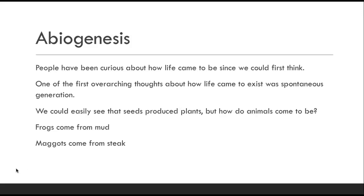That became the prevailing thought because nobody did any science to prove it correct or incorrect. It wasn't until actual scientists started testing these hypotheses that things changed. They got two identical cuts of steak, leaving one covered and one uncovered, and saw that both went rancid — but the uncovered one got visited by flies and then maggots appeared, while the covered one did not. That's when you can start to press against this hypothesis of abiogenesis or spontaneous generation.